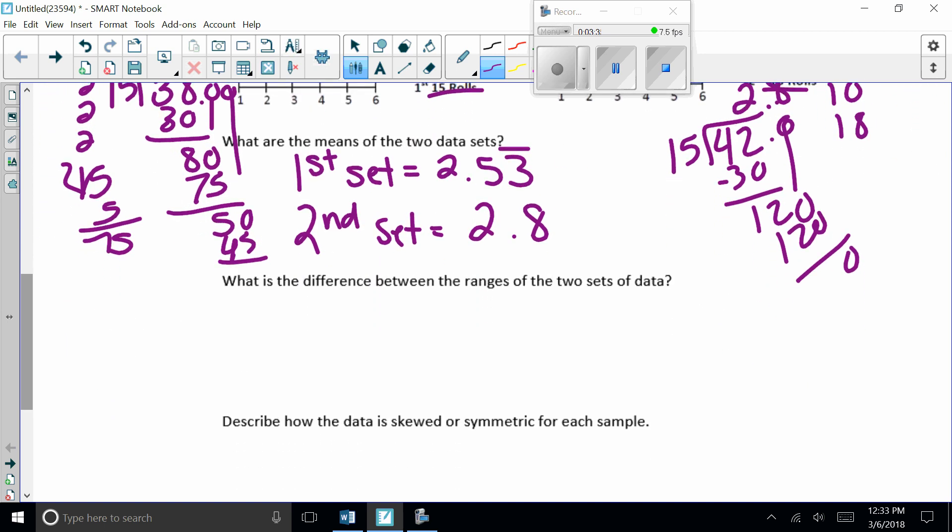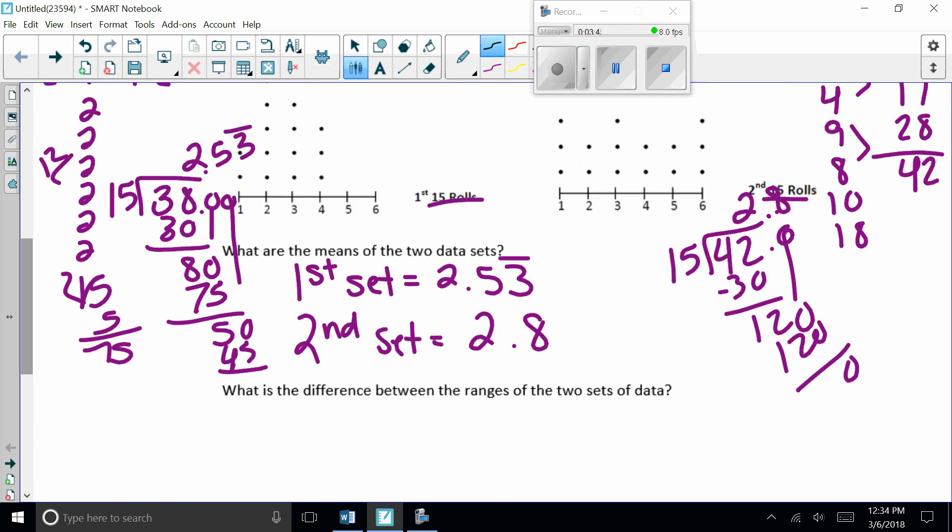Okay, so now it says what is the difference between the ranges of the two sets of data. Remember ranges is the largest minus the smallest. So when we look at data set 1, our largest number is 4 and our smallest number is 1. So our range is 3. Set 2, we have 6s and we also have 1. So that's just going to be 6 minus 1. And so that's 5.